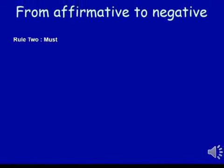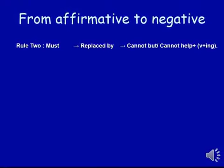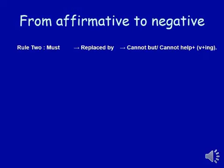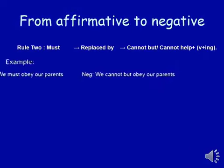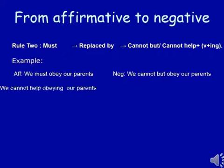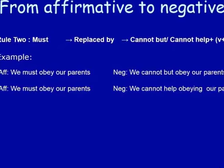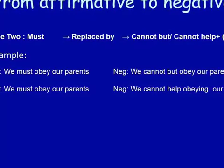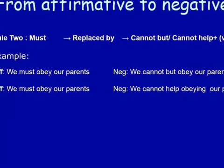Rule number two: 'most' is replaced by 'cannot but' or 'cannot help.' In case of 'cannot help,' we have to use the verb plus '-ing.' For example: 'We must obey our parents.' In the place of 'must,' we use 'cannot but': 'We cannot but obey our parents.' Or using 'cannot help': 'We cannot help obeying our parents.' We have to use the verb plus '-ing.'